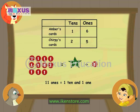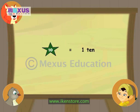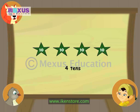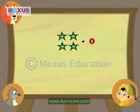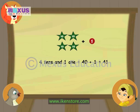So, we will replace 10 red cards with one green card. Now we count the green cards — the number of tens. Each green card equals 1 ten, so we have 4 green cards, meaning 4 tens. Now we have 4 tens and 1 one. Chubby, can you tell me what number that is? 4 tens and 1 one can be written as 40 plus 1, which is 41. So, there are 41 crayons.